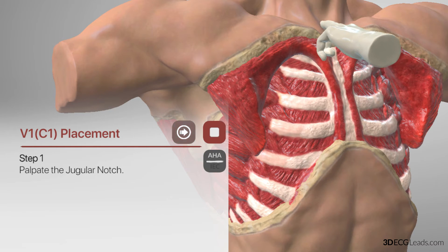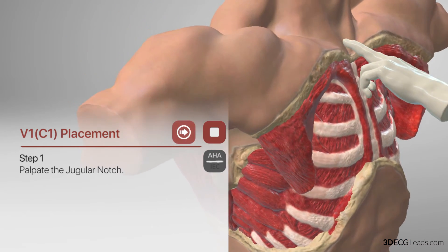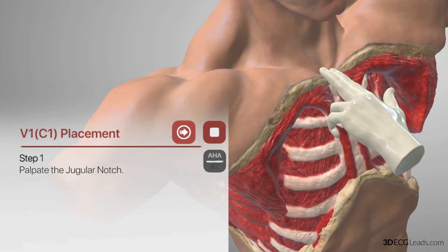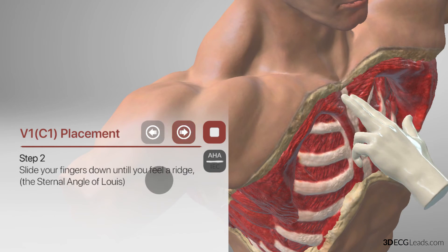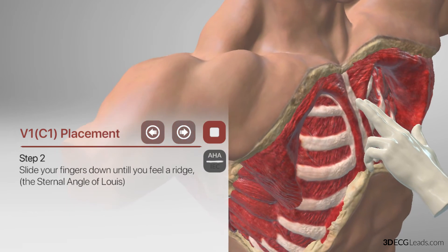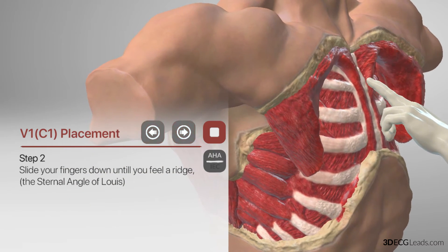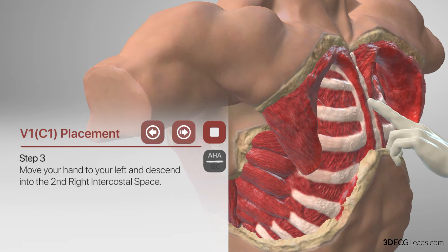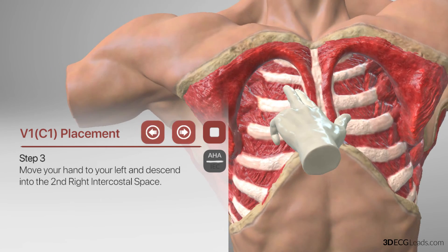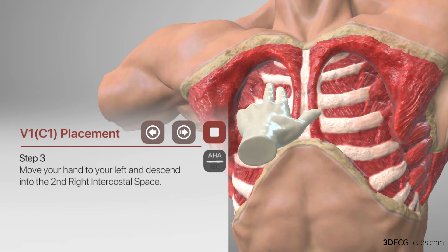The first step in the placement of V1 is to identify what we call the jugular notch of the sternum. That is the depression that you can feel at the base of the neck on the top of the sternum. From there, the second step is to slide your fingers down until you feel a slight elevation. This is the sternal angle of Louis. From here, move your hand slightly to the left and downward, but stop when you reach the first depression. This is the right second intercostal space.